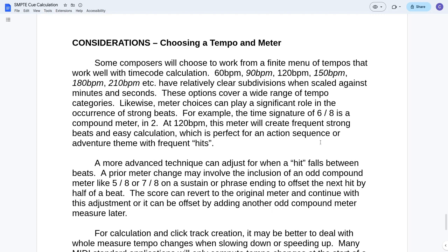For example, the time signature of 6/8 is a compound meter in two. There's only two beats. So you have a strong beat every other beat at 120 beats per minute. This meter will create frequent strong beats and easy calculation, which is perfect for an action sequence or adventure theme with frequent hits. So using a very accessible beats per minute range and then using a meter that has frequent strong beats, you really set yourself up for low hanging fruit.